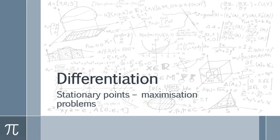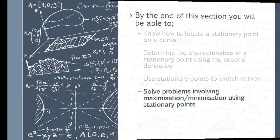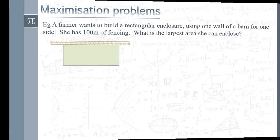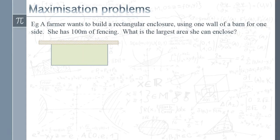Hi and welcome to our third video in this series on differentiation and using stationary points. In this video we're going to be having a look at the modeling style questions that you might get in the exam, which are to do with maximization problems or even minimization. We've gone through finding stationary points and determining the characteristics of those, so let's have a look at how that gets applied in context. I've picked three examples to give you a sense of the different kinds of questions that could come up.